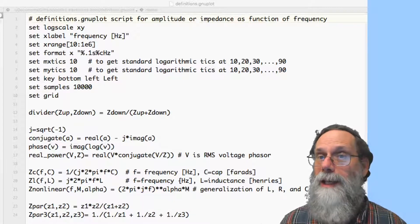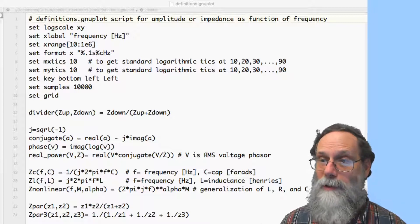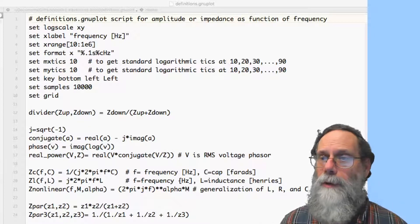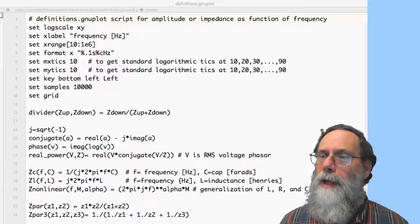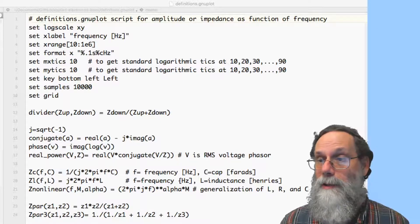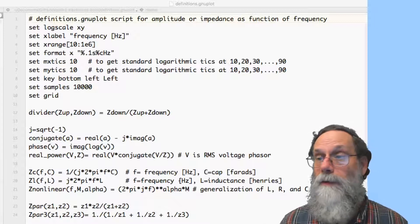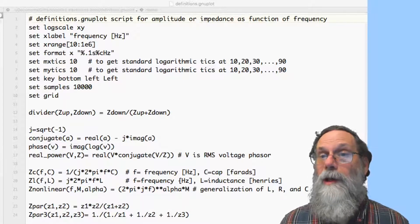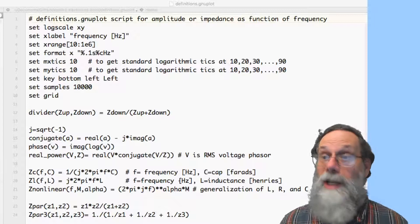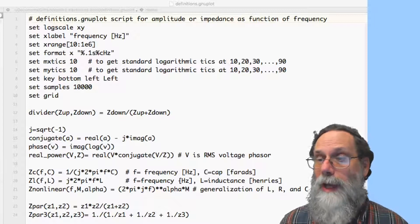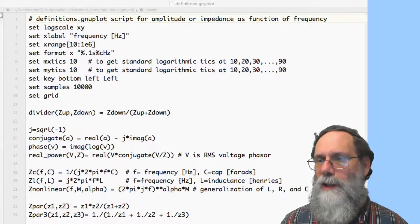Notice I haven't set a label here for the y-axis because I use these definitions for both Bode plots that are gain, where the y-axis is gain and unitless, and for impedance, where the y-axis is the magnitude of impedance and is in ohms. So because the y-label changes in different plots, I didn't build that into this definitions.gnuplot script.